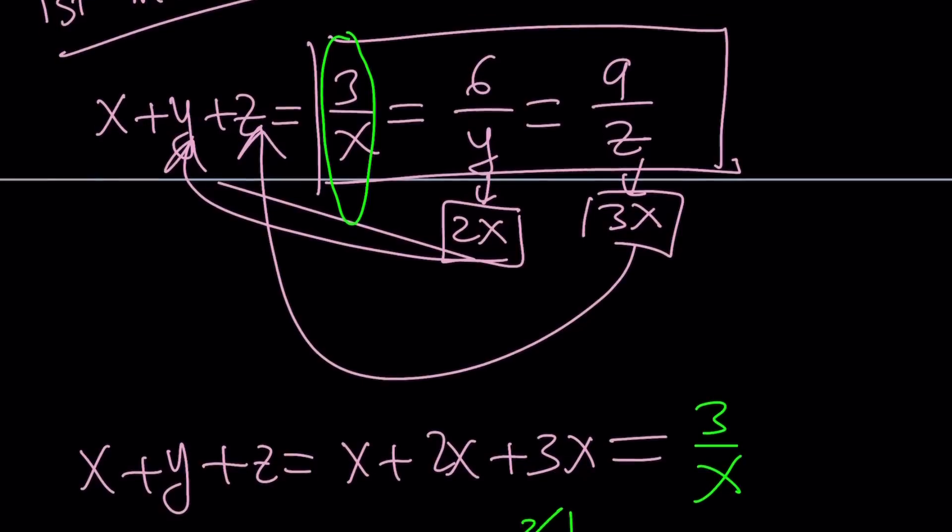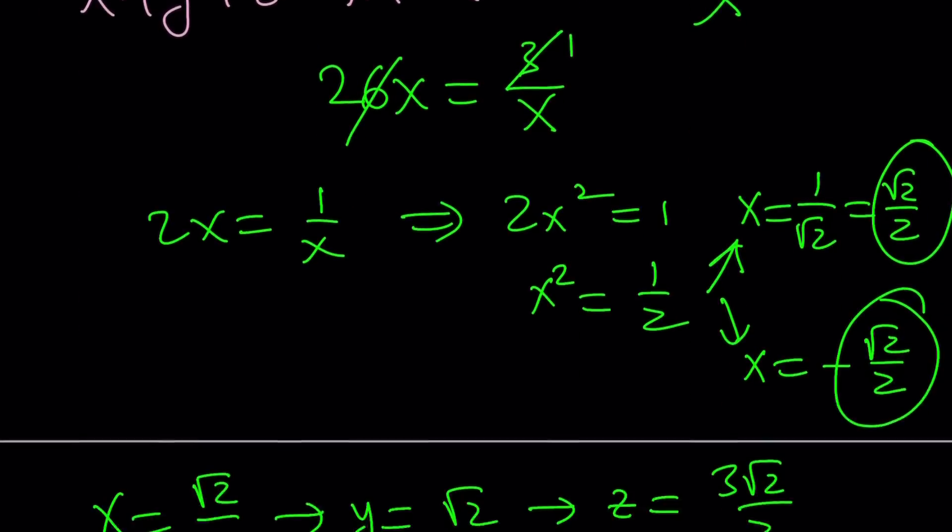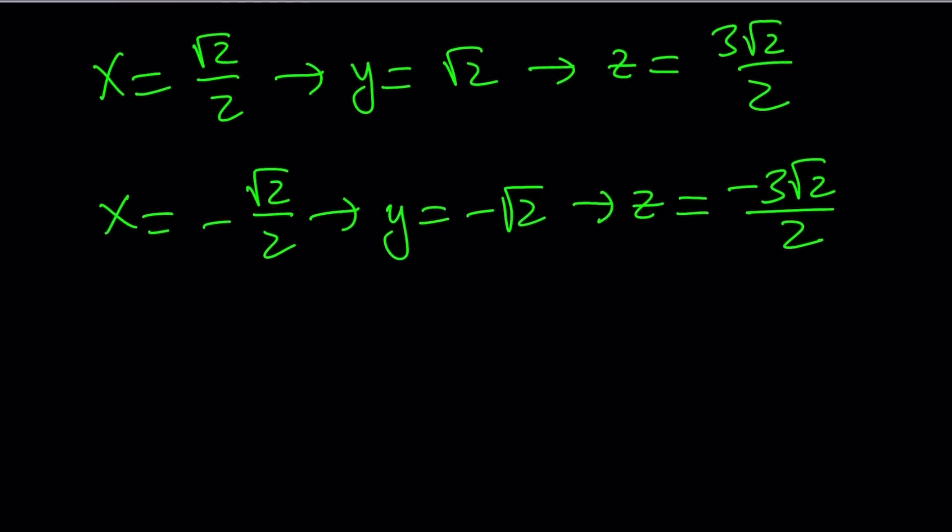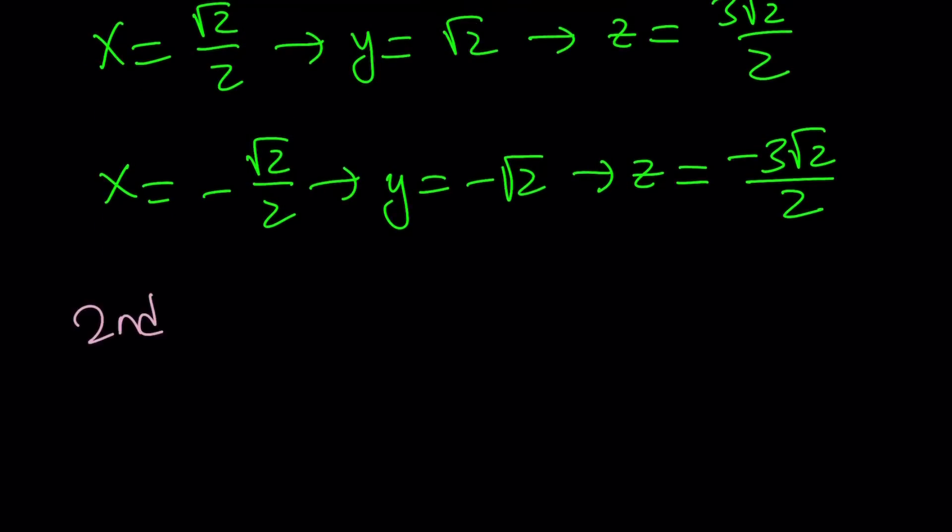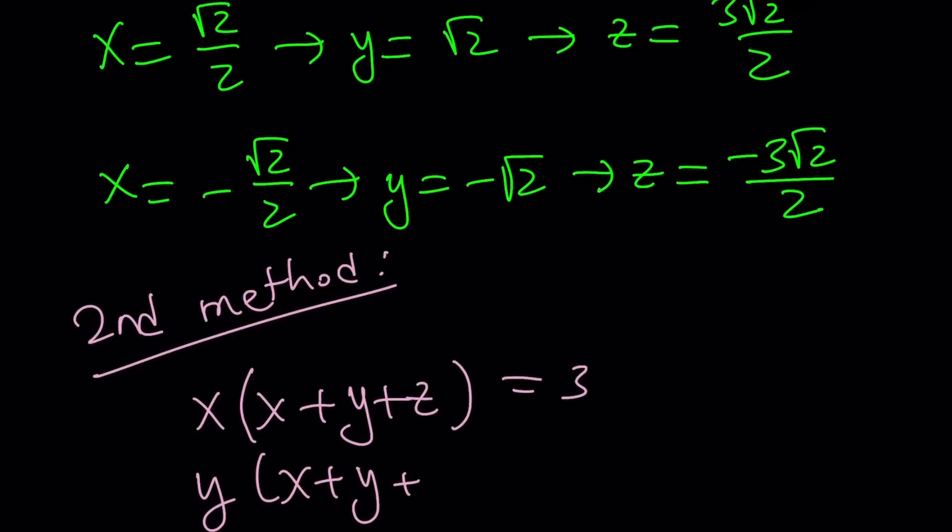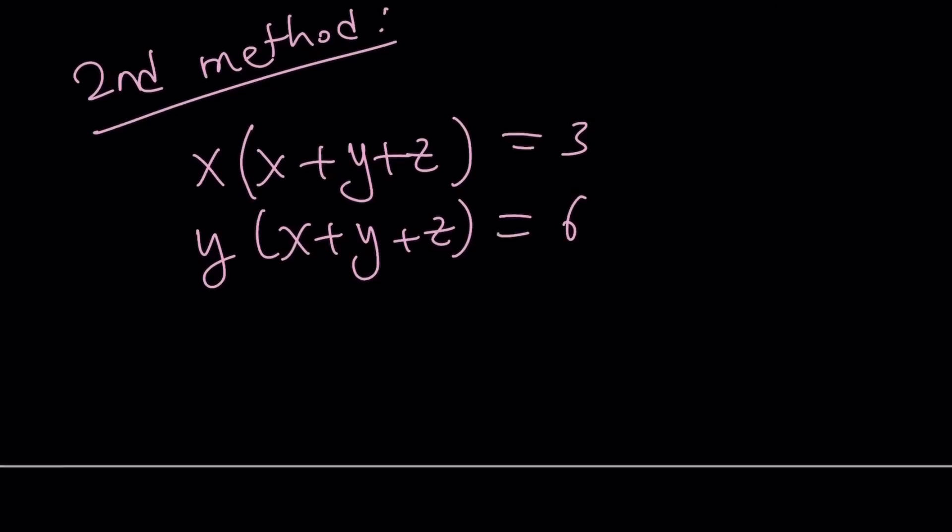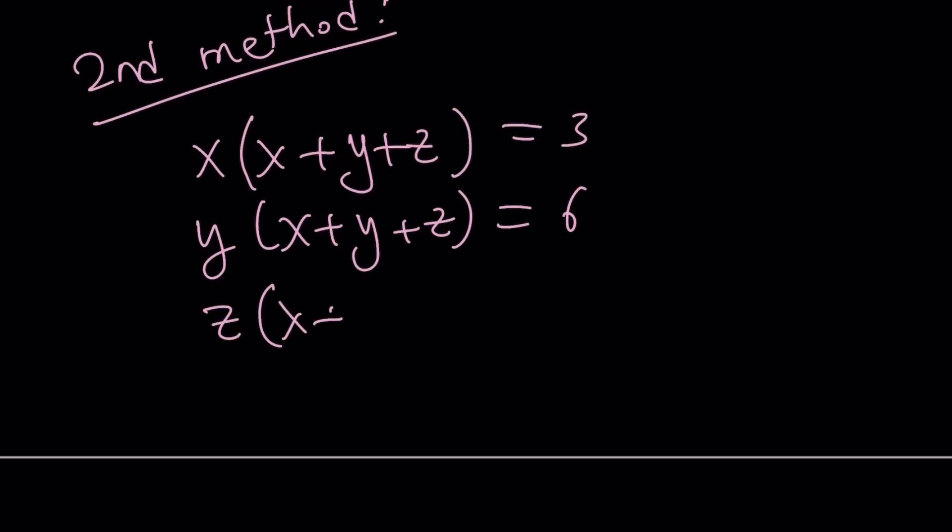Let's go ahead and talk about the second method. And I'm pretty sure you're going to come up with a third method. Second method. I'm going to rewrite the original system. x times x plus y plus z is 3. y times x plus y plus z is 6. And z times x plus y plus z is 9.